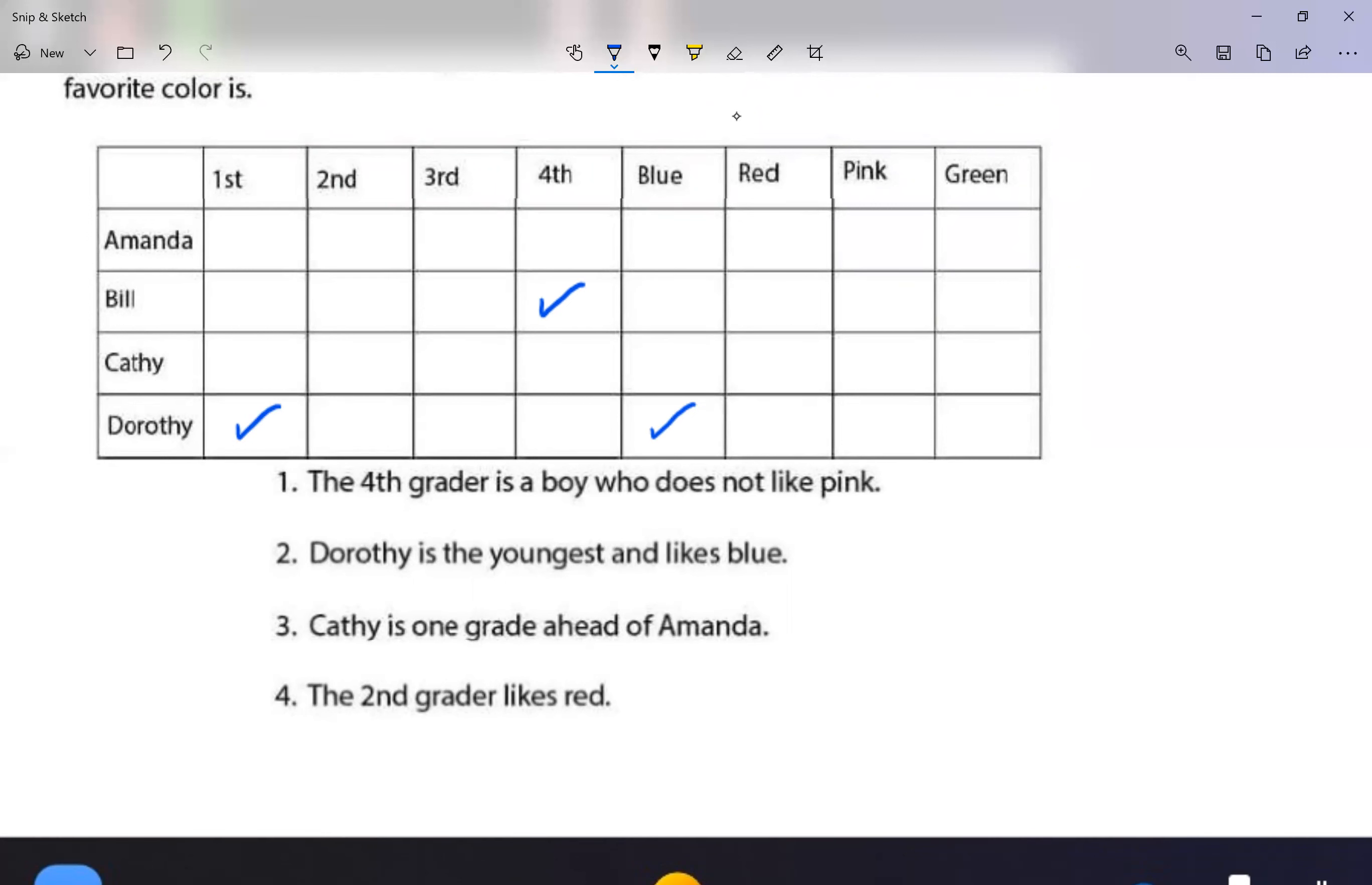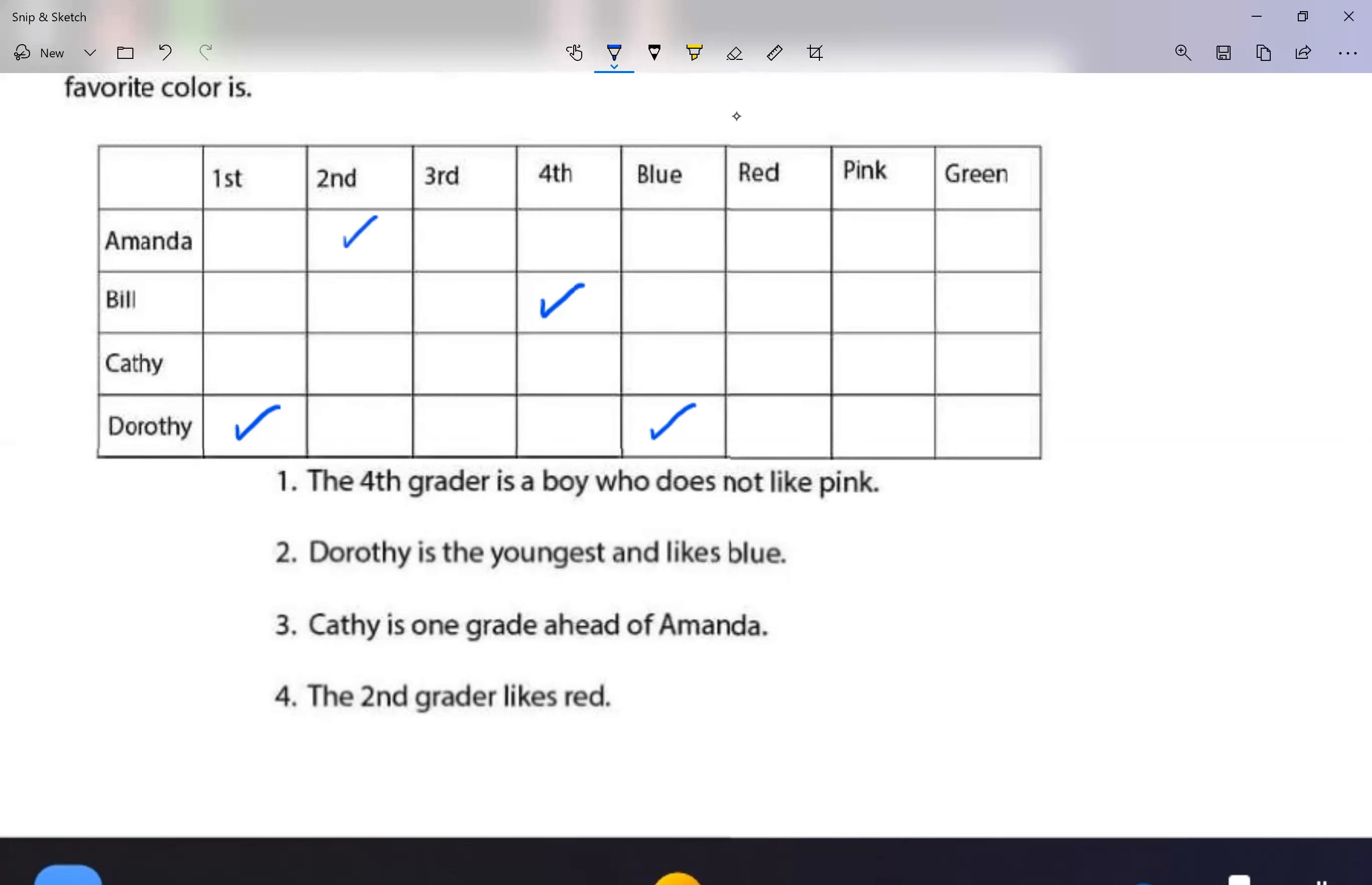But Cathy is ahead of Amanda, so I'm going to say Amanda's second grade and Cathy's third grade. The second grader likes red. Okay, Amanda is the second grader, she likes red.